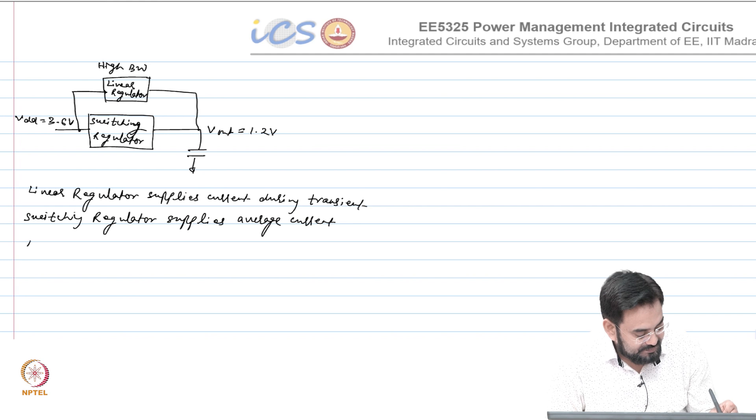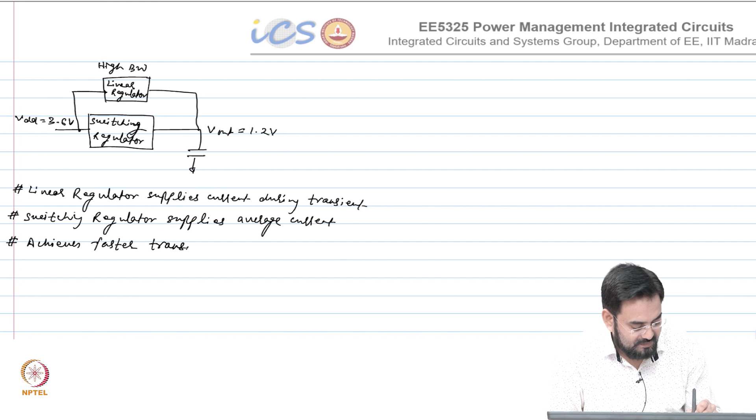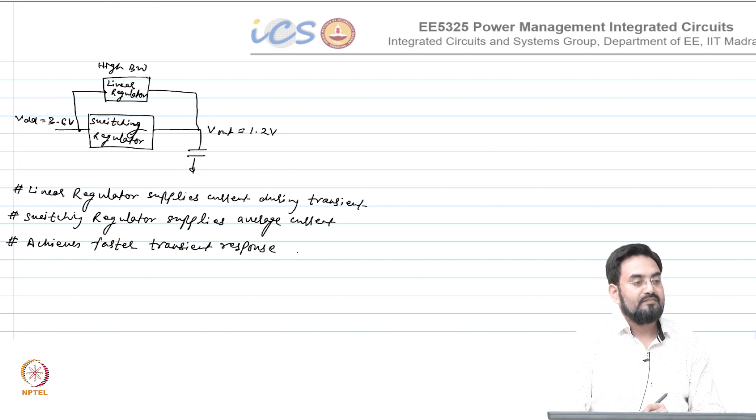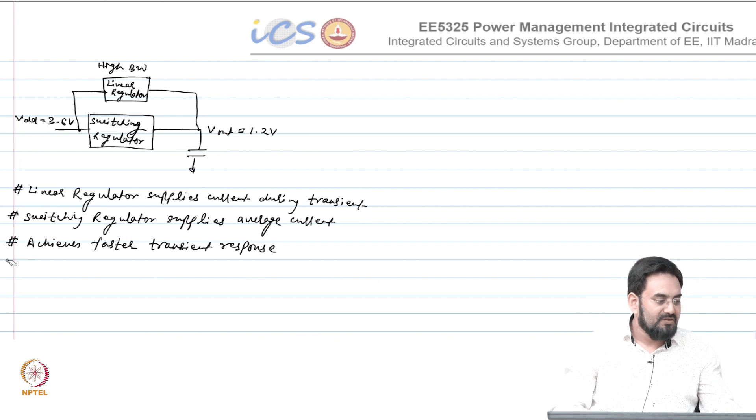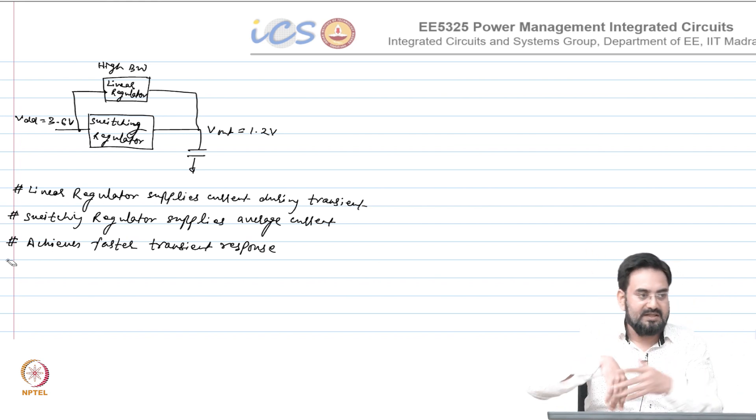The advantage is it achieves faster transient response. In your cell phone there are two cases: one, current from the battery will be drawn as a steady state current or average current. On top of that you will have some activities going on which are like transient activities, they will come for a very short duration and then go away.